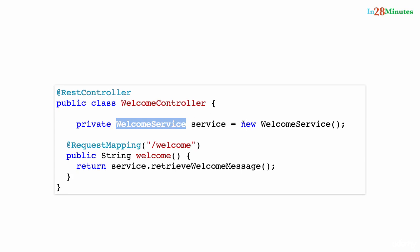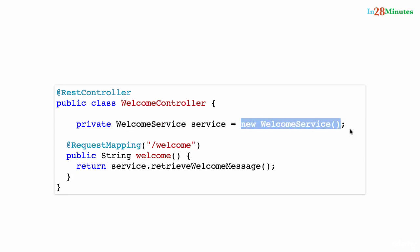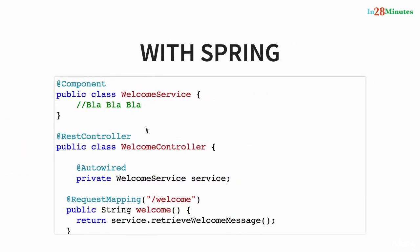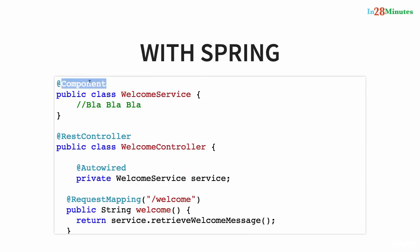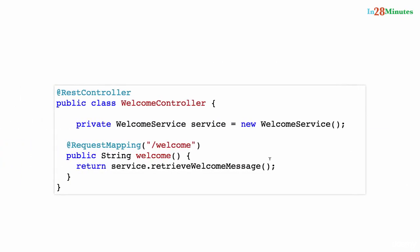The way it used to be is the WelcomeController directly creates an instance of WelcomeService — that means this is tightly coupled. However, when we use Spring, we would create WelcomeService as a @Component and we would put @Autowired on it, and we would auto-wire the WelcomeService into the WelcomeController. Spring Framework does that for us.